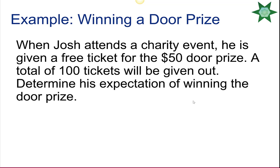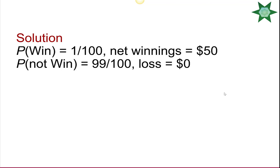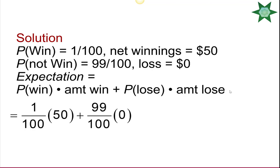When Josh attends a charity event, he's given a free ticket for a $50 door prize, with a total of 100 tickets given out. The probability of winning is 1/100 (gaining $50) and not winning is 99/100 (losing nothing, since the ticket was free). His expected value works out to 50 cents, so it's definitely to his advantage to participate.